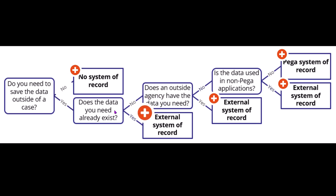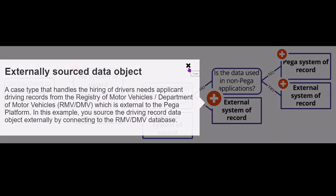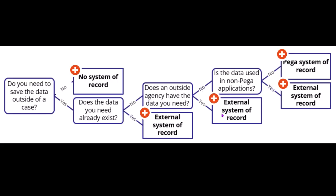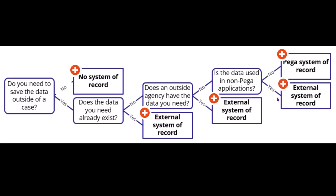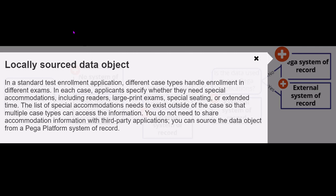If the data doesn't exist already, check if the data is held by some third party agency or centralized master database. If yes, that will be your external system of record. If not, you have two options: push data to an external system of record, or save the data locally within Pega itself as a locally sourced data object.